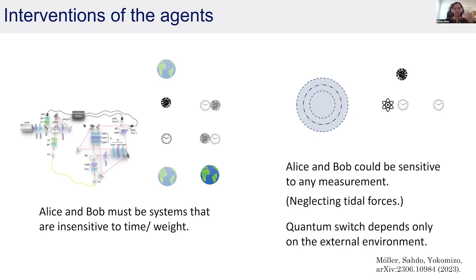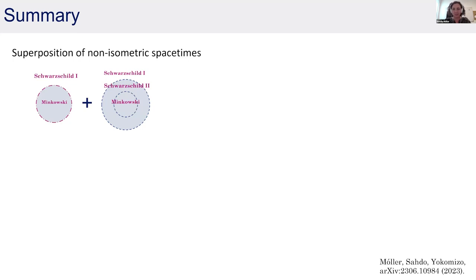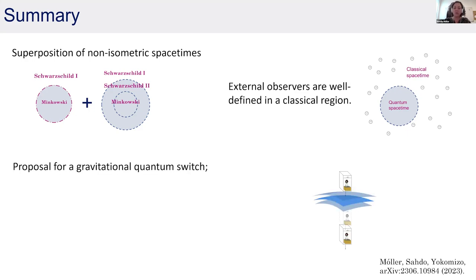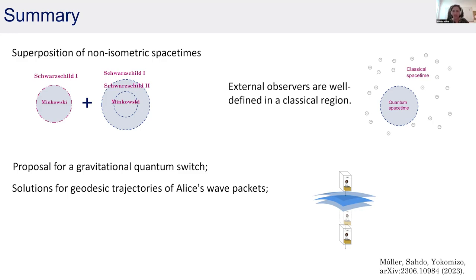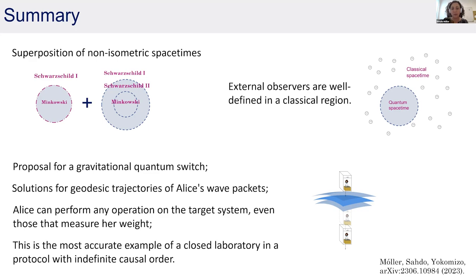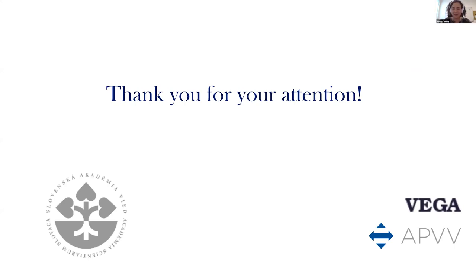As a summary: we made a superposition of non-isometric spacetimes, introduced this spacetime where external observables are well-defined in the classical region, and provided a proposal for a gravitational quantum switch. We found analytic solutions for the trajectories of Alice's wave packets. She can perform universally any operation on the target system, even those that measure weight. This is the most accurate example of a closed laboratory in a protocol with indefinite causal order.